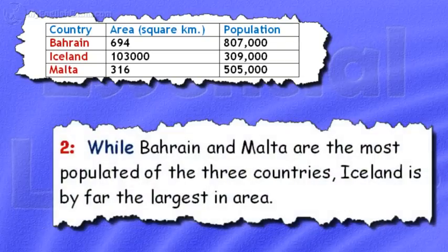Example 2. While Bahrain and Malta are the most populated of the three countries, Iceland is by far the largest in area.